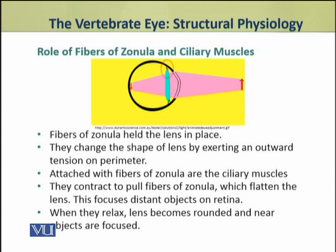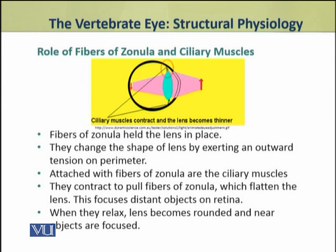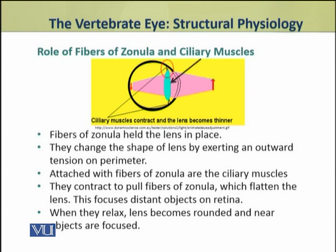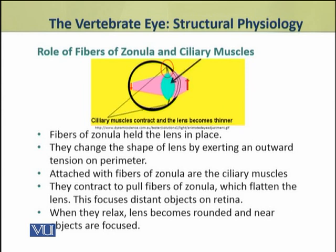The fibers of zonula hold the lens in its place, and they also change the shape of the lens by exerting an outward tension on the perimeter — applying a force on the sides of the lens, which increases or decreases the thickness of the lens. The fibers of zonula are not contractile themselves; rather, the ciliary muscles attached to them are contractile. They contract and pull the fibers of zonula, and when pulled, the fibers of zonula flatten the lens. This flattening of the lens causes distant objects to be focused on the retina.